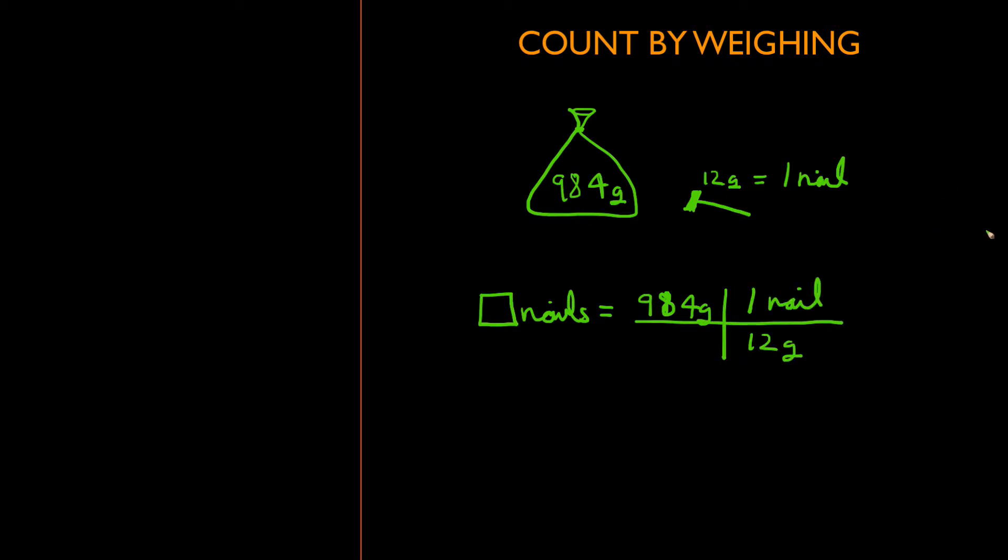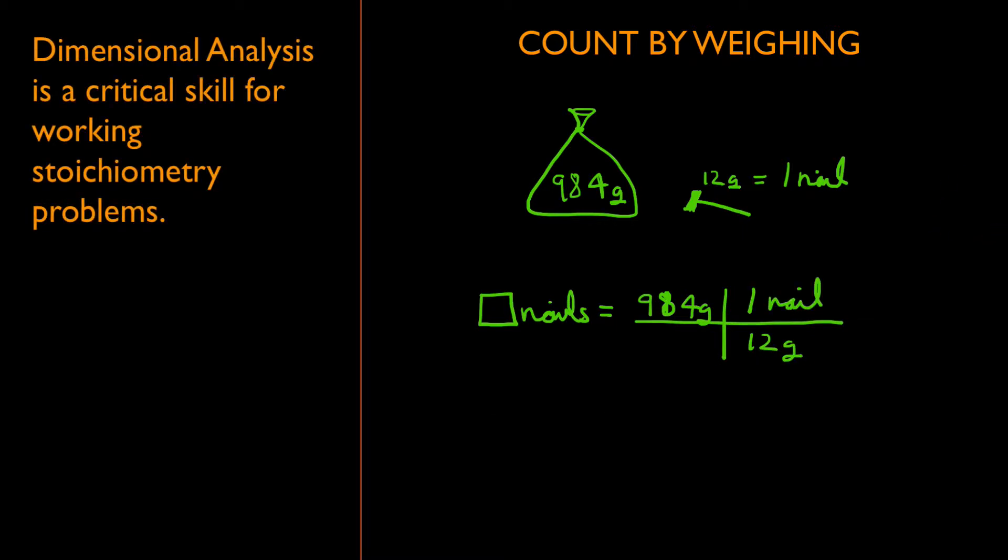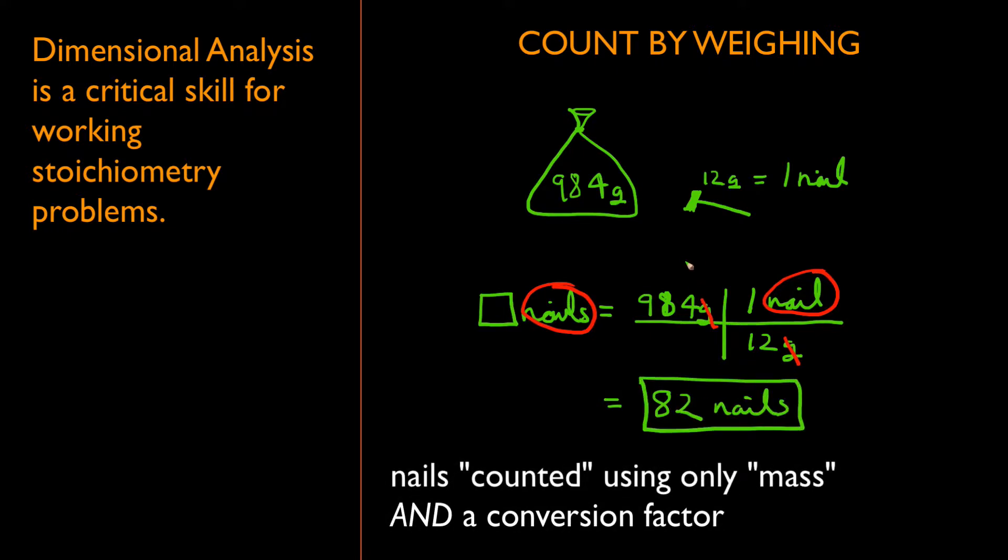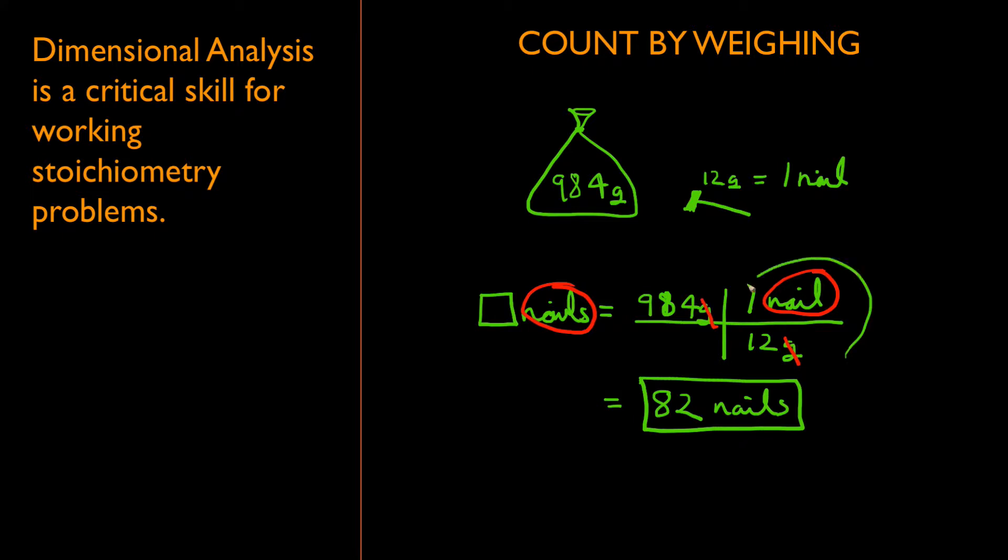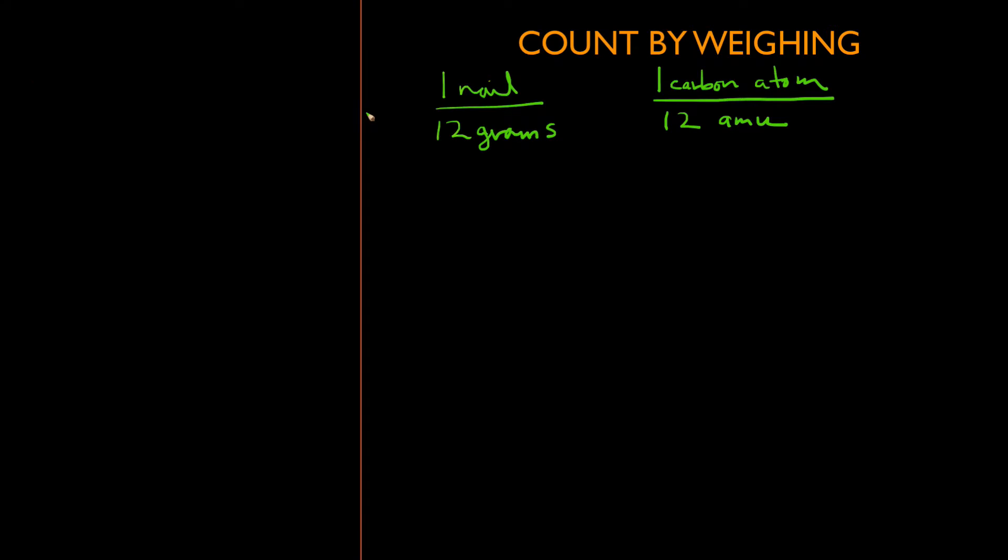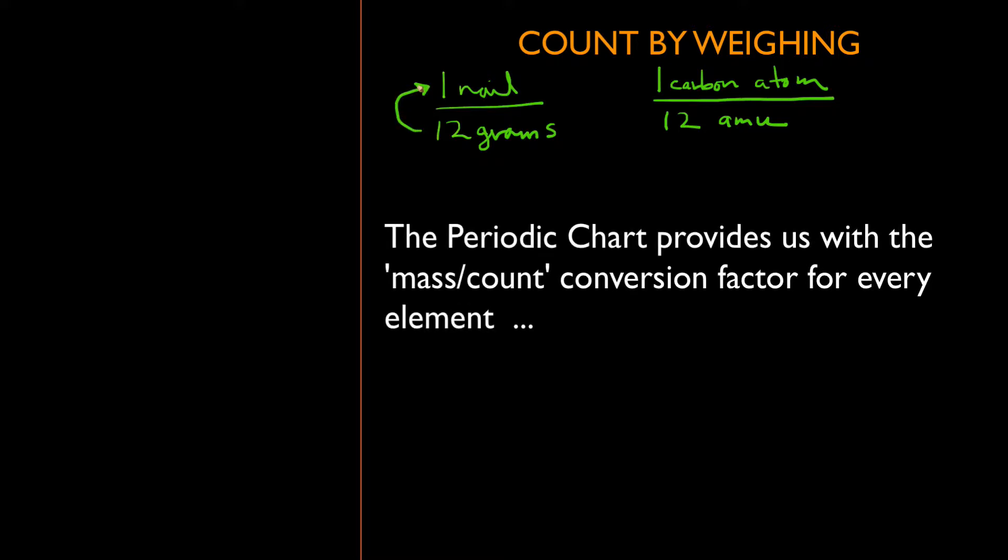We merely set up the dimensional analysis equation where everything cancels out but nails. Once we have the units we're looking for, we multiply the equation out and we have been able to count the nails by merely weighing the bag of nails. The key here is to note this ratio: the number of grams per nail. Why this relationship is important is it allows us to turn how much something weighs into a count.